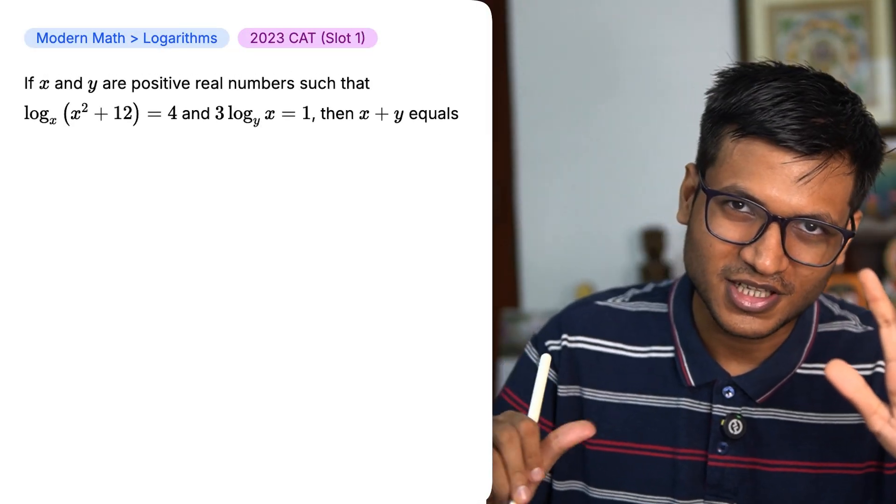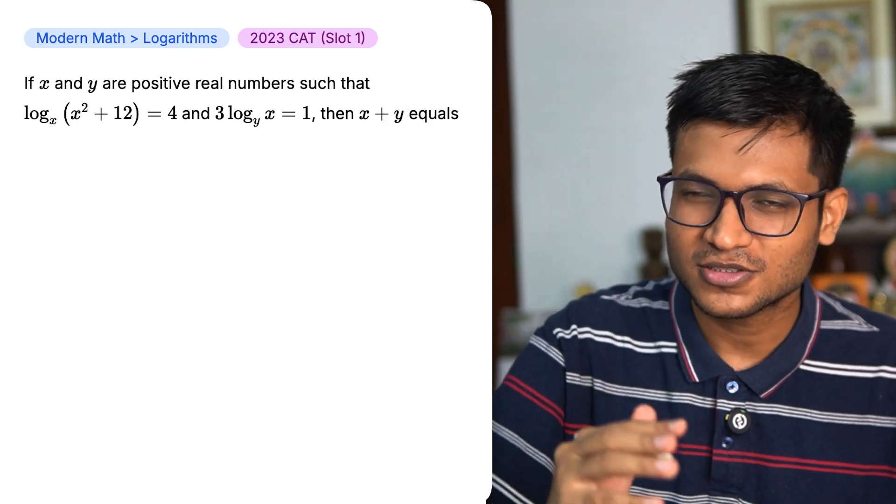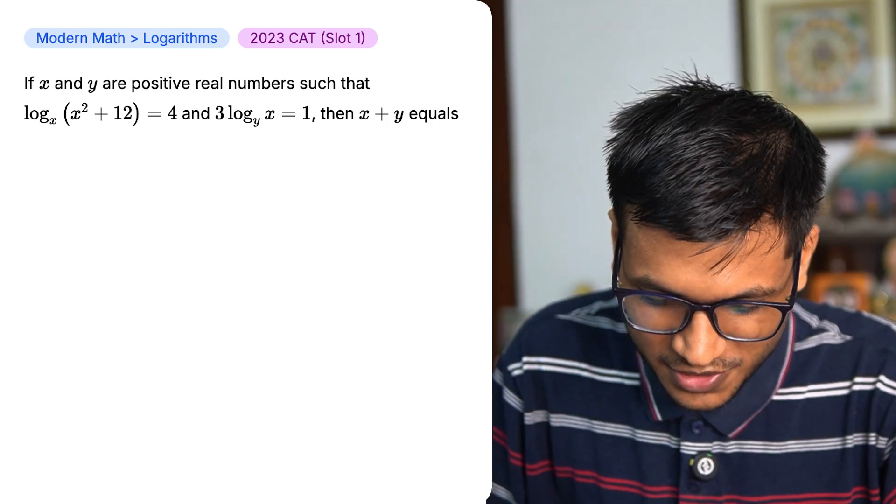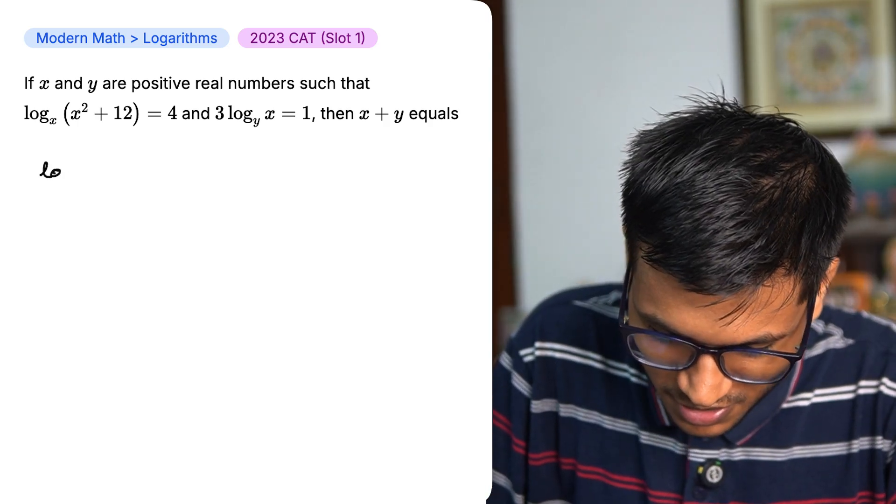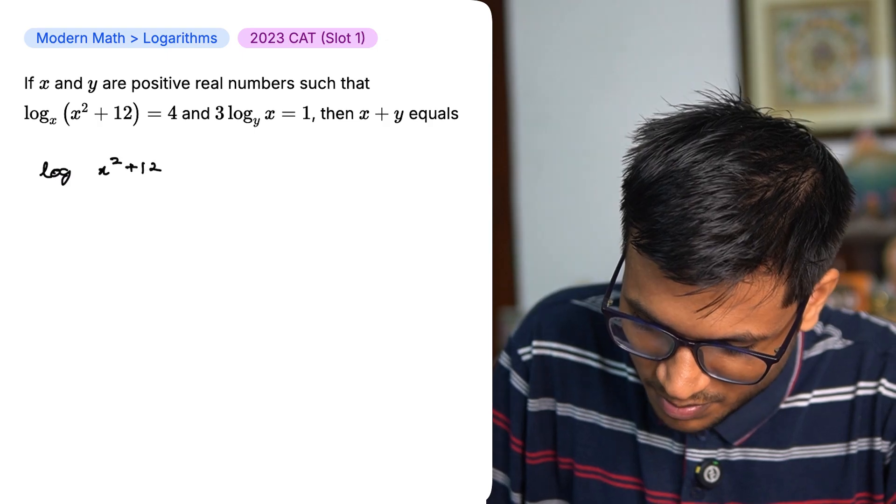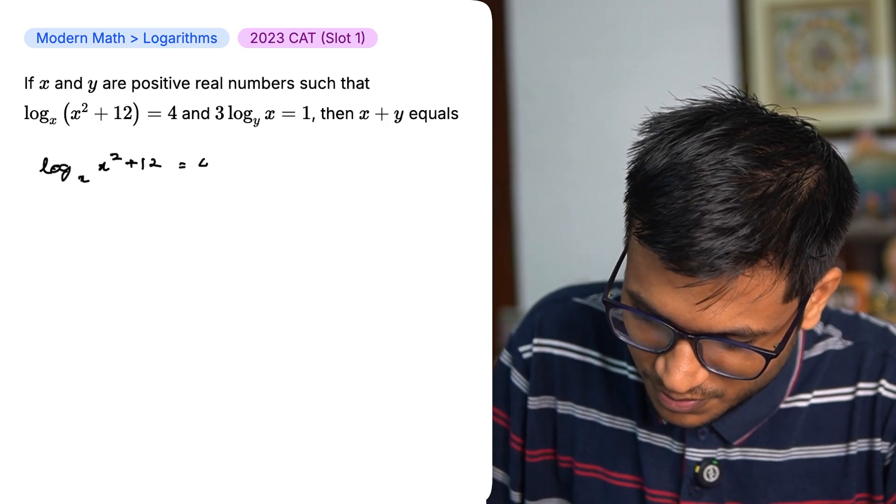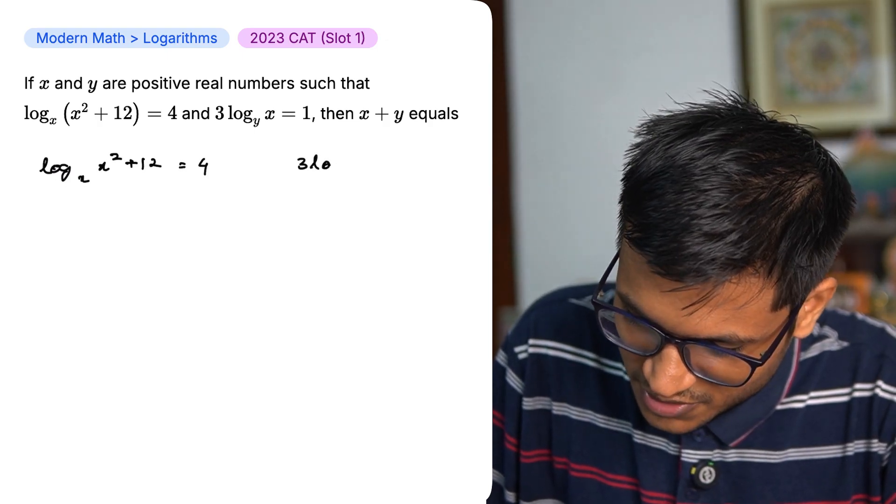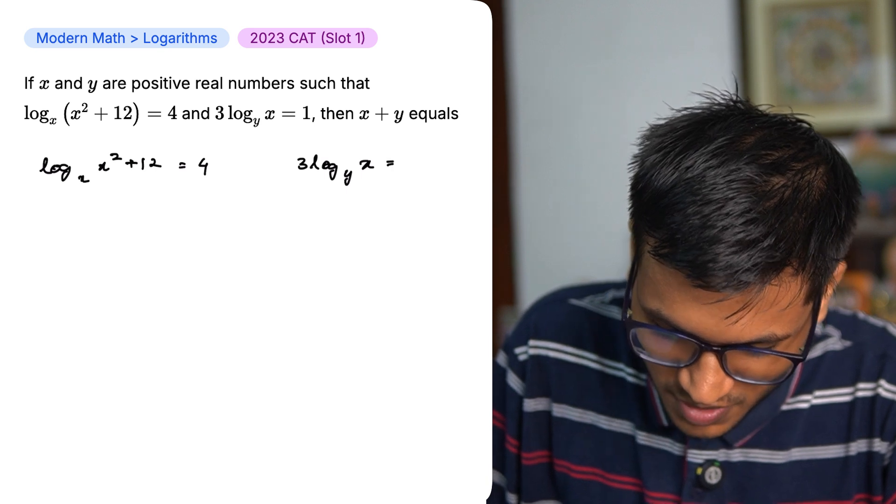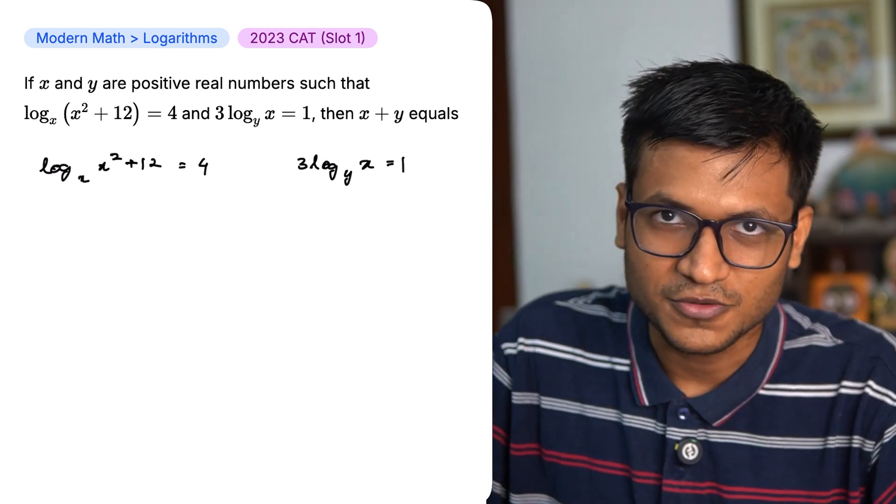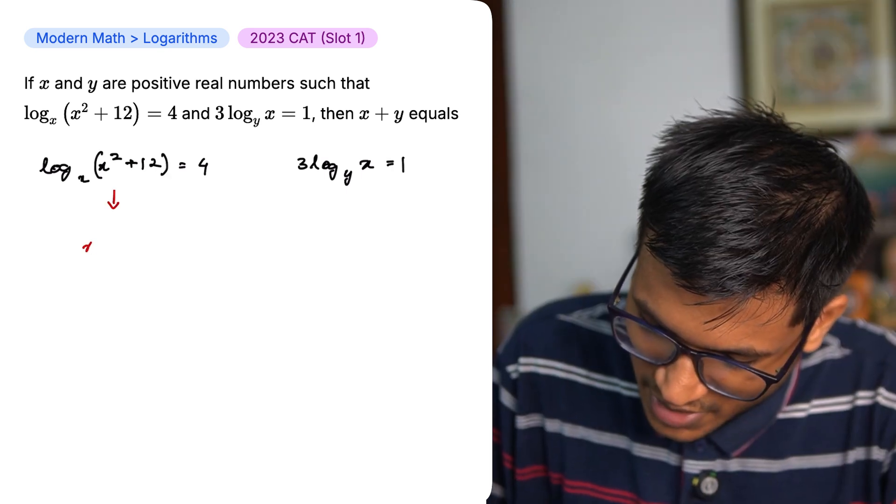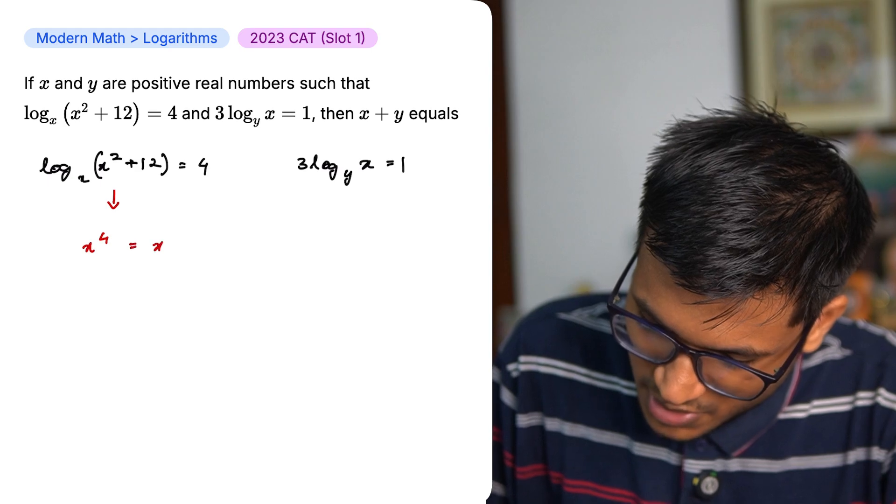Day 5 of solving CAT previous year questions and I realized you do not suck at math. You're just crazy. If x and y are positive real numbers such as log x (x² + 12) base x equals to 4 and 3 log x base y equals to 1, what is the value of x plus y?